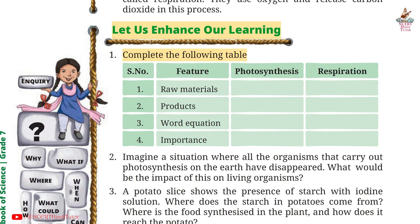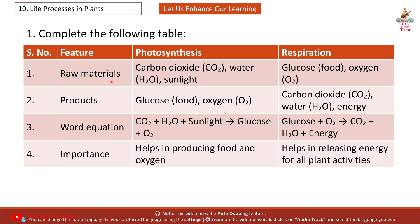Let us enhance our learning. Question 1: Complete the following table. Answer: Raw Materials — Photosynthesis: carbon dioxide (CO2), water (H2O), sunlight; Respiration: glucose, oxygen (O2). Products — Photosynthesis: glucose, oxygen (O2); Respiration: carbon dioxide (CO2), water (H2O), energy. Equation — Photosynthesis: CO2 + H2O + sunlight → glucose + O2; Respiration: glucose + O2 → CO2 + H2O + energy. Importance — Photosynthesis helps in producing food and oxygen; Respiration helps in releasing energy for all plant activities.